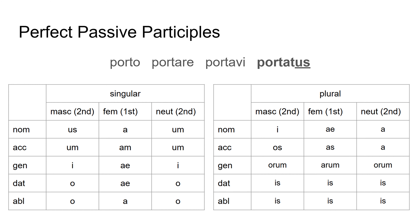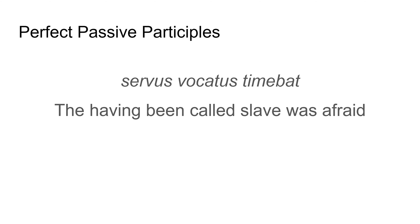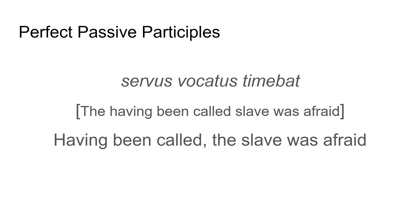Let's have a look at a sentence with a perfect passive participle, starting nice and easy with masculine nominative singular. I've got 'servus vocatus timebat'. I know straight away that servus is nominative — he's in charge of my sentence, the slave. I then go to the end: timebat, 'was afraid'. So 'the slave was afraid'. Then I get more information about the slave from the participle vocatus. Literally this could be 'the having-been-called slave was afraid' — that is perfectly fine and would get you full marks — however it's a bit clunky. So: 'having been called, the slave was afraid'. I could change this to 'after he had been called' or 'when he had been called', but I like to keep the passive sense. This is a more fluent translation but the literal one would work just as well.